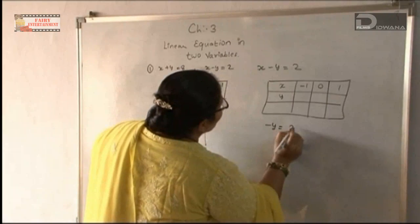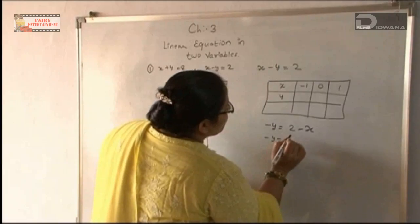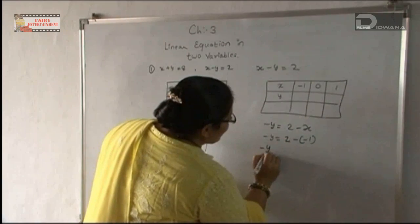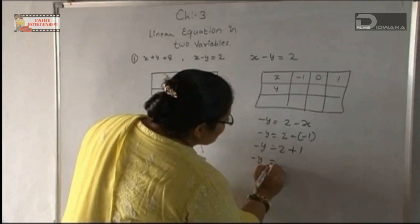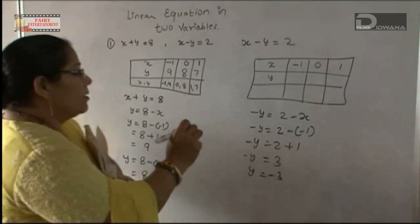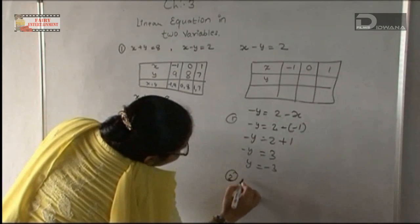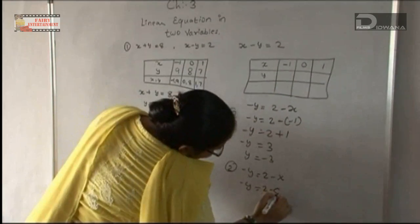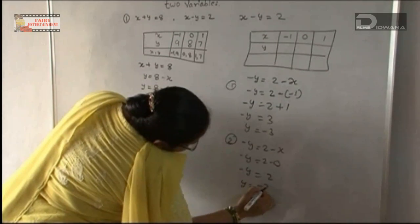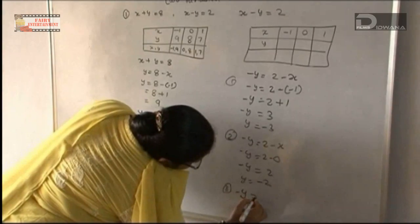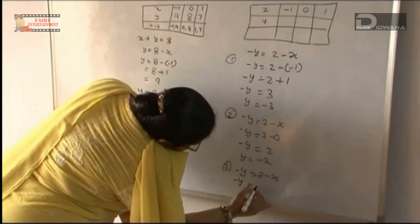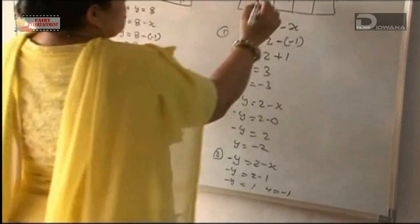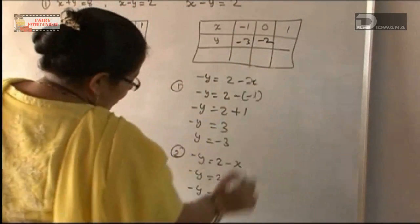From x minus y equal to 2, we get minus y equal to 2 minus x. When x equals minus 1: minus y equals 2 minus minus 1, so minus y equals 3, giving y equals minus 3. When x equals 0: minus y equals 2, so y equals minus 2. When x equals 1: minus y equals 2 minus 1, so minus y equals 1, giving y equals minus 1.